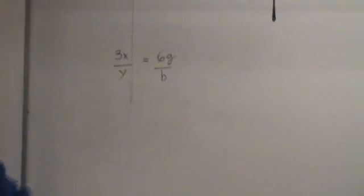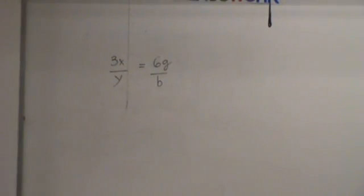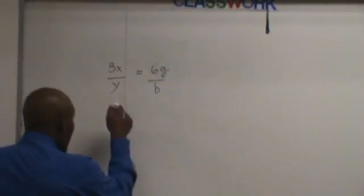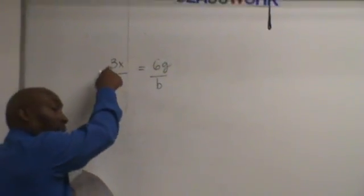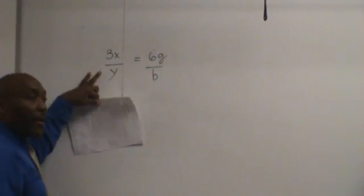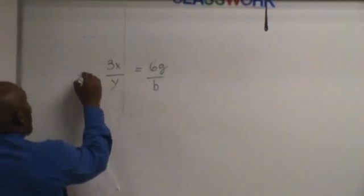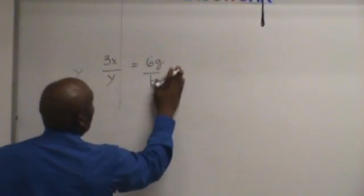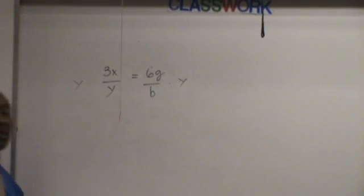So we're solving for x. How do we solve for x? We need to get rid of the y and we need to get rid of the 3. So to get rid of the y, we will have to divide both sides by y. That's the first step.